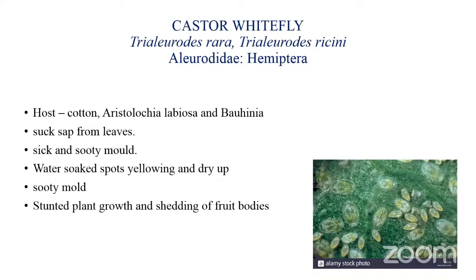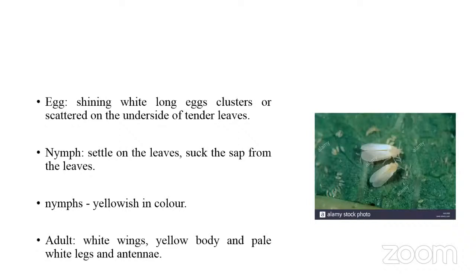The biology: the female lays shiny white long eggs in small clusters or scattered on the underside of tender leaves. Eggs hatch into nymphs that settle on the leaves and suck sap along with the adults. Both the nymphs and the pupa are yellowish in color. The adult fly has white wings and a yellow body, with pale white legs and antennae. It is a very tiny insect, less than one millimeter in length.